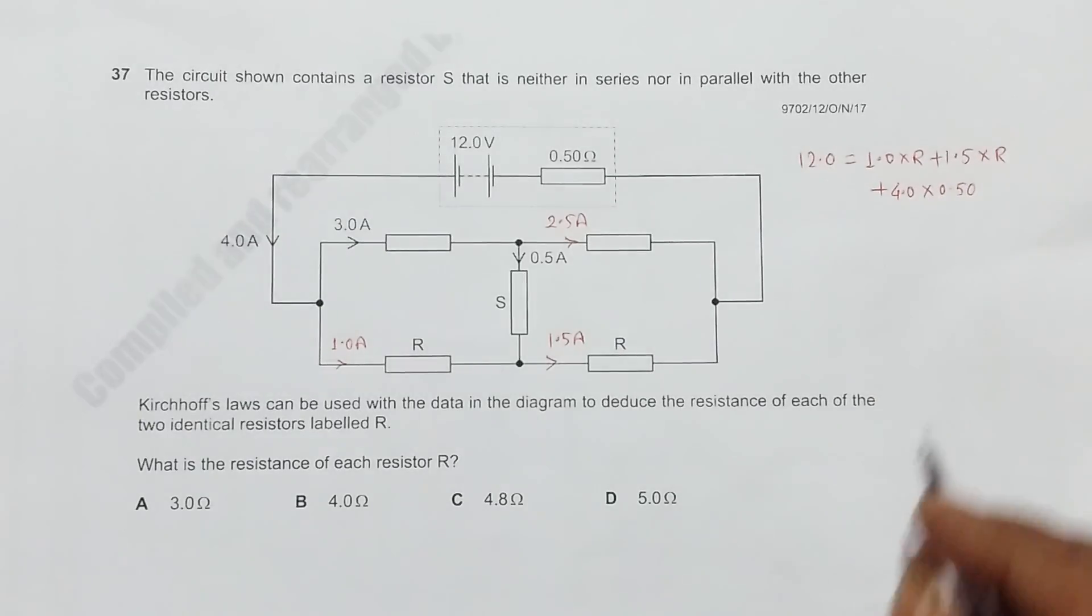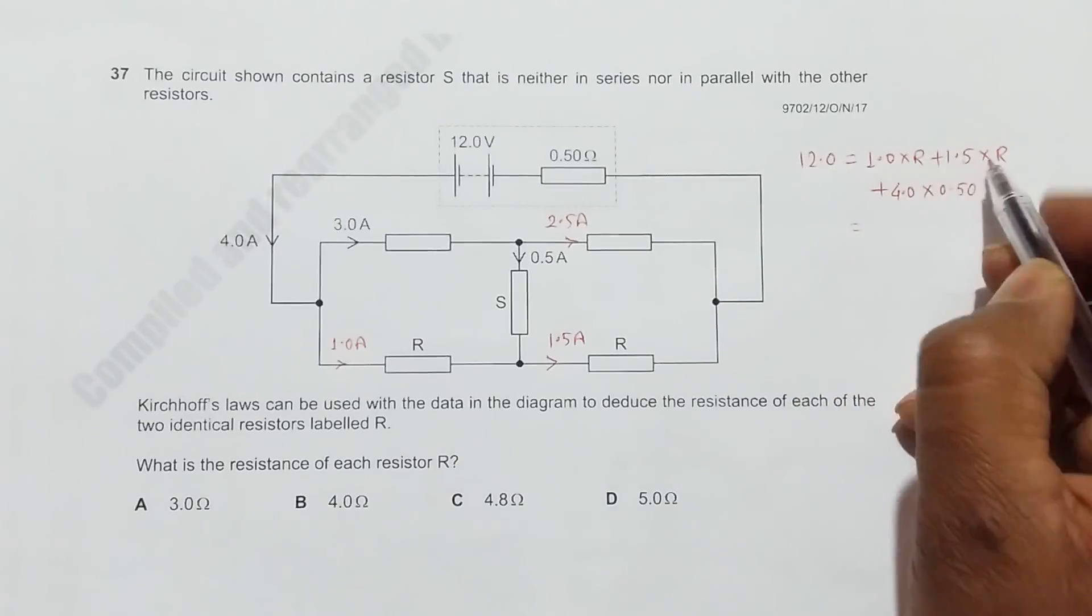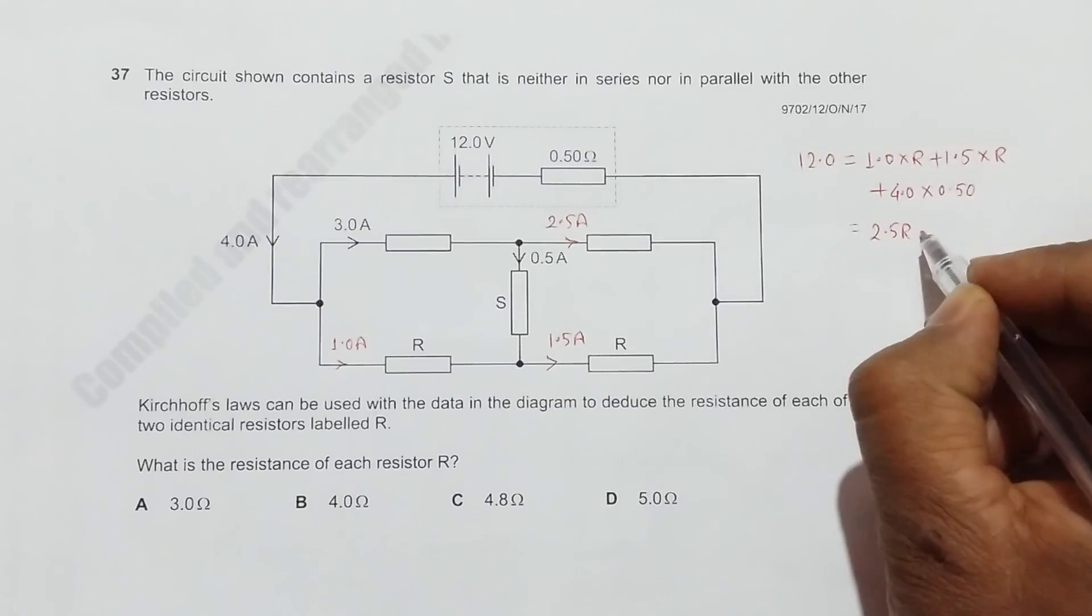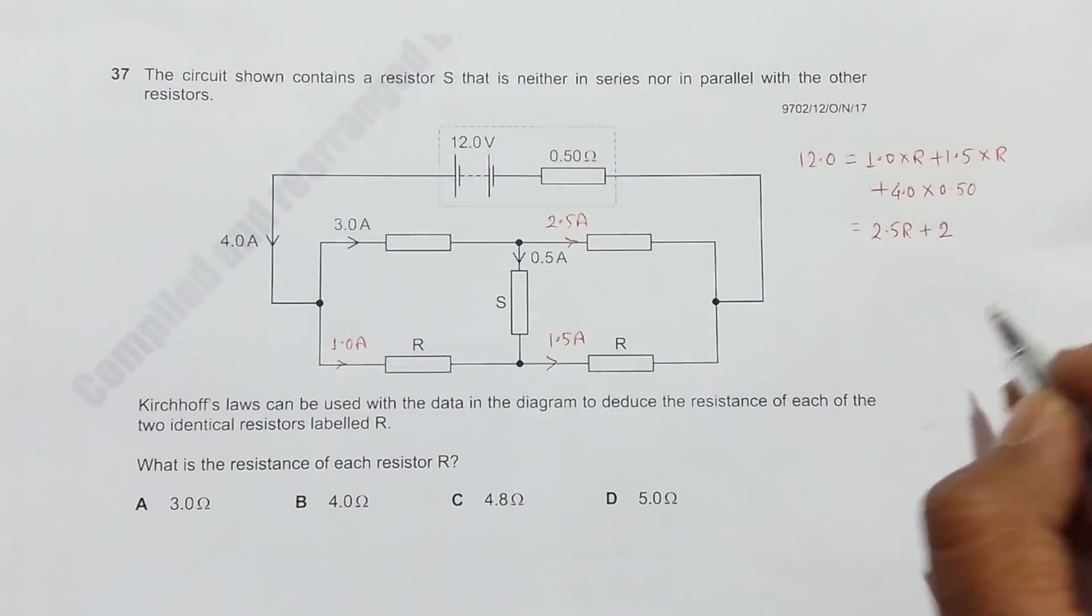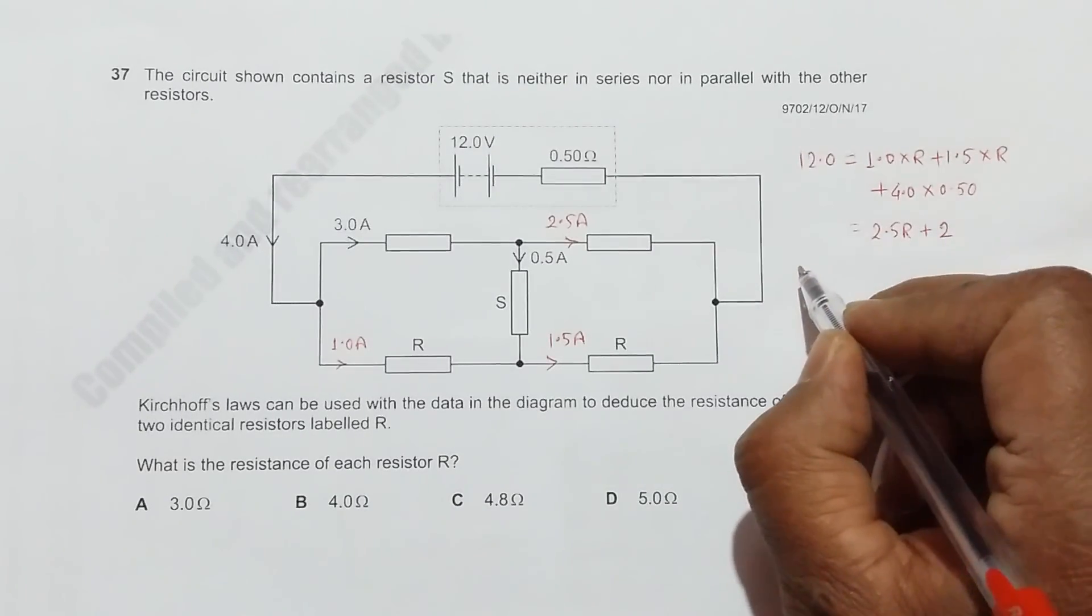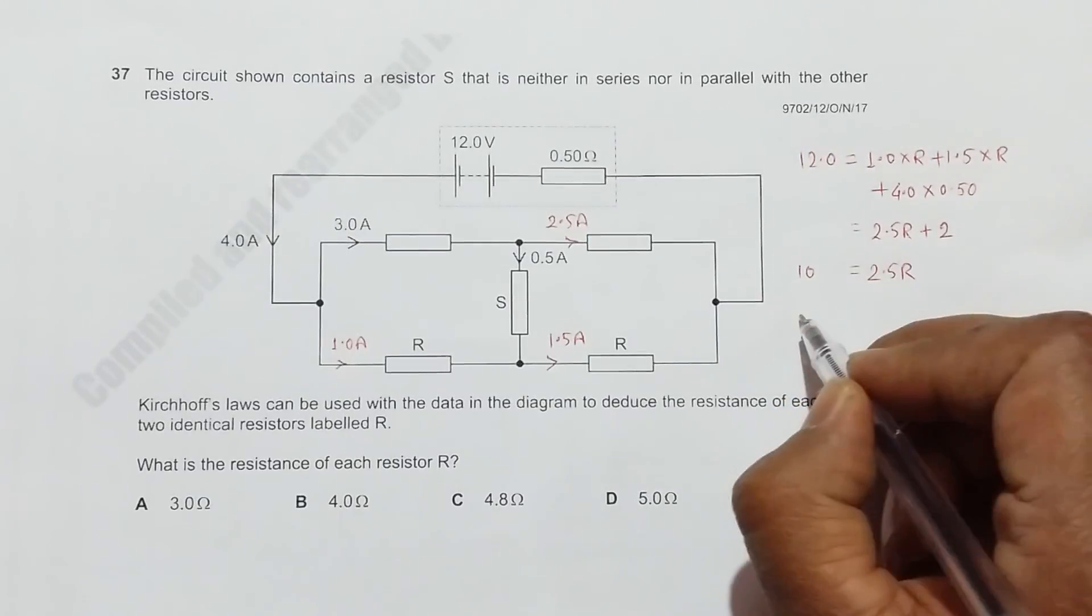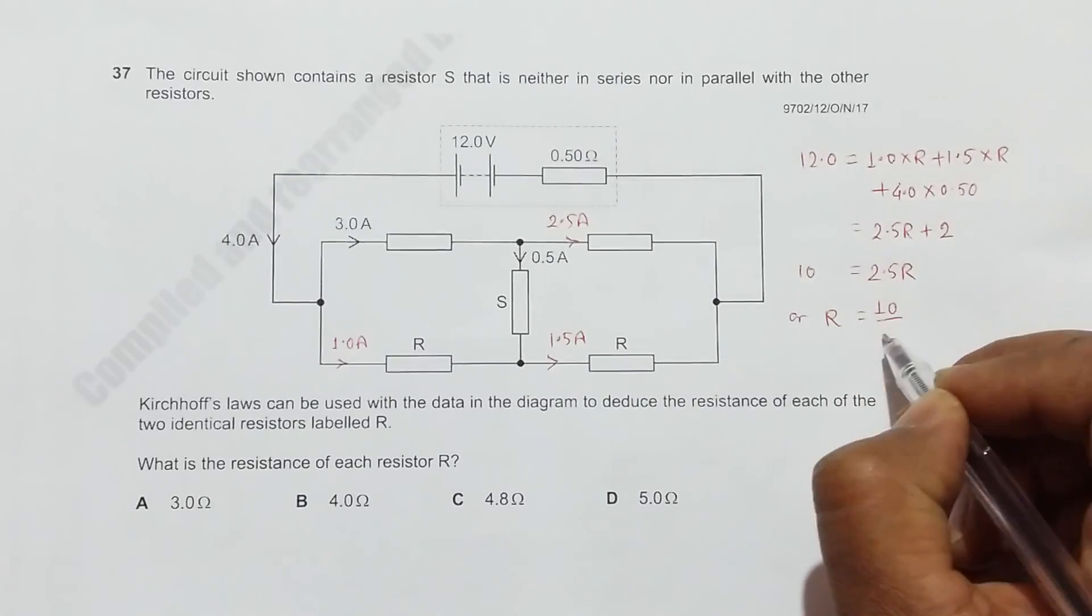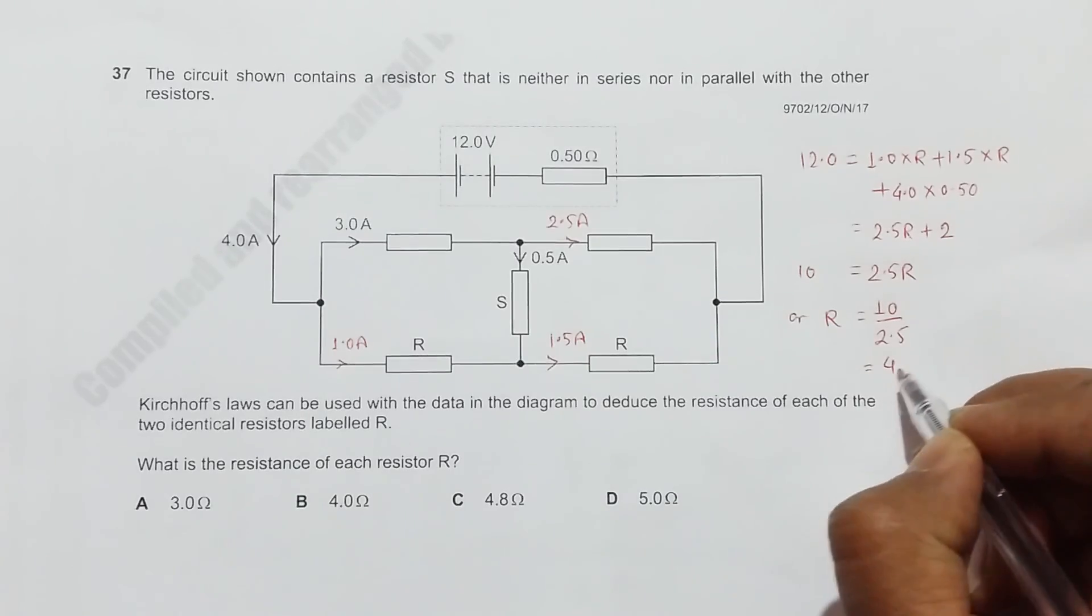So this gives us, if we add these two terms, 2.5R plus 2. If we take this 2 to the other side, it's 10 equals 2.5R, which gives us R equals 10 divided by 2.5, equals 4 ohms.